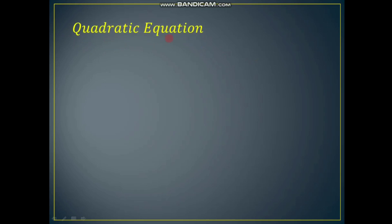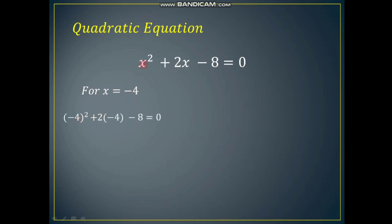Let us have another type — the quadratic equation: x squared plus 2x minus 8 equals 0. As this is a quadratic equation it must have two solutions. If we substitute x equal to minus 4, the left hand side becomes minus 4 squared plus 2 times minus 4 minus 8, which gives 16 minus 8 minus 8 equals 0. So x equal to minus 4 is one of the solutions.